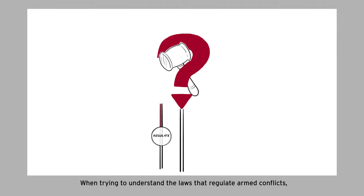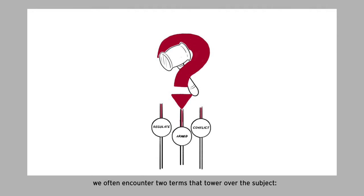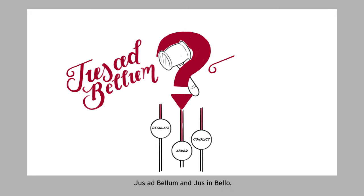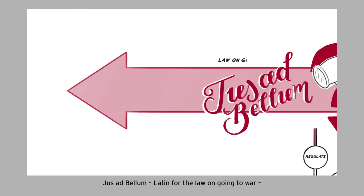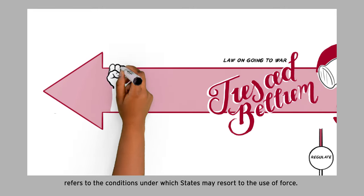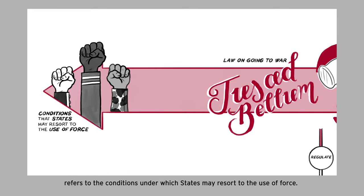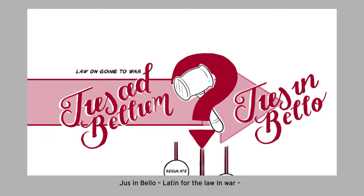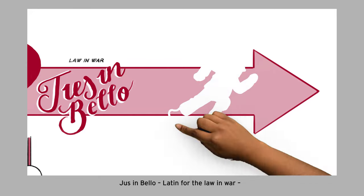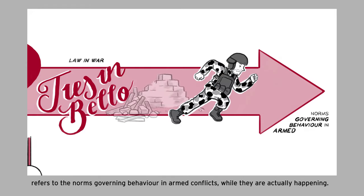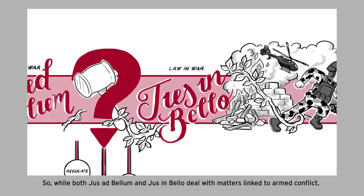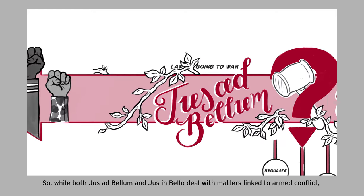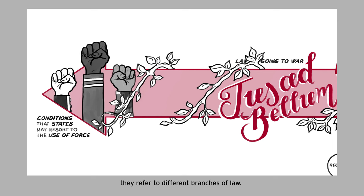When trying to understand the laws that regulate armed conflicts, we often encounter two terms that tower over the subject: jus ad bellum and jus in bello. Jus ad bellum, Latin for 'the law going to war,' refers to the conditions under which states may resort to the use of force. Jus in bello, Latin for 'the law in war,' refers to the norms governing behavior in armed conflicts while they are actually happening. So while both deal with matters linked to armed conflict, they refer to different branches of law.